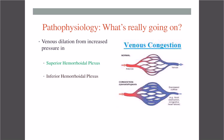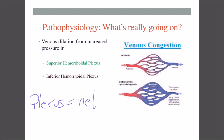Let's get into the science behind the pathophysiology — what is really going on. The definition of hemorrhoids is basically a venous dilation from increased pressure in two areas: the superior hemorrhoidal plexus and the inferior hemorrhoidal plexus. By the way, 'plexus' is another name for a network of veins. I'm going to talk a little bit about what venous congestion is.